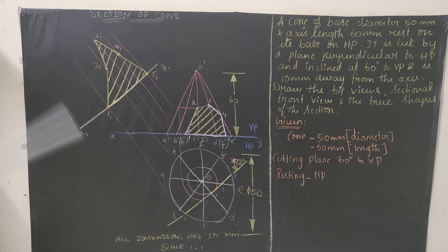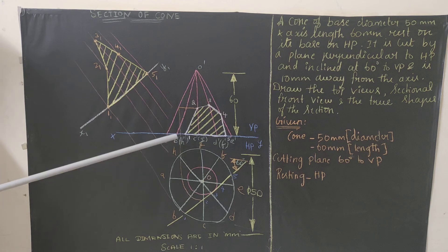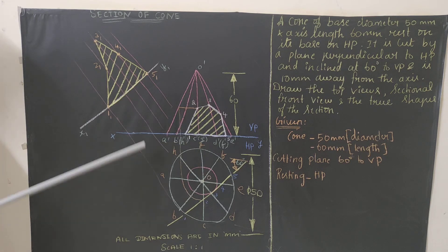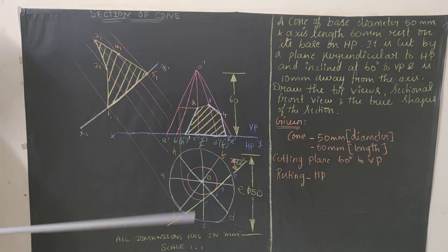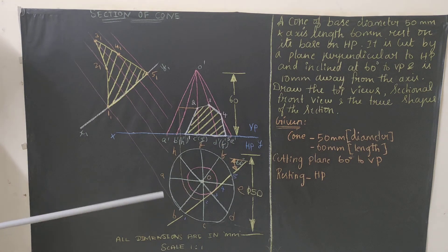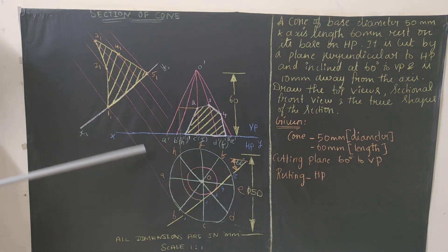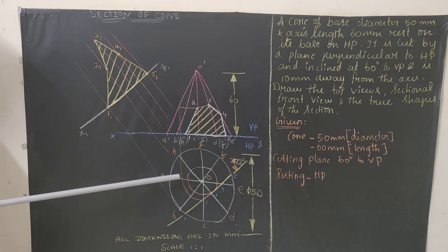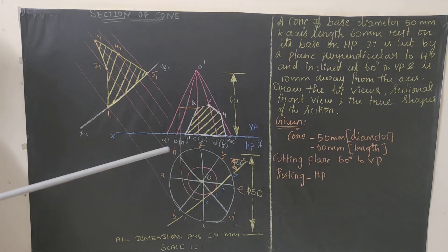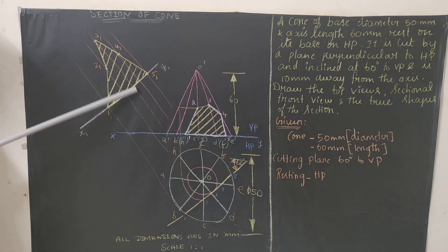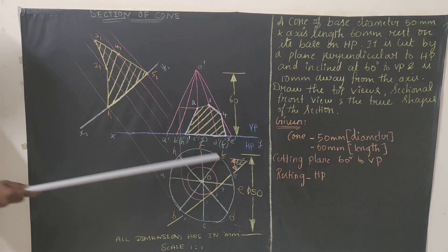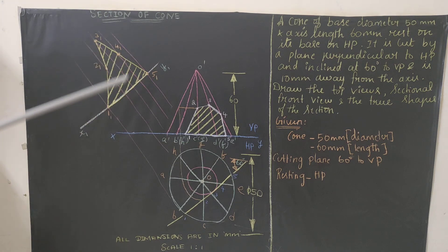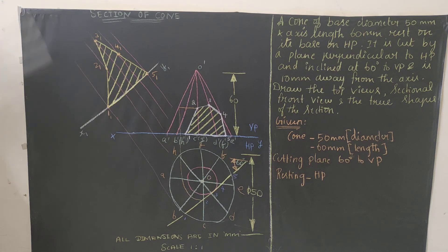From each of the five cutting points on the sectional front view, draw perpendicular lines to the new reference line X1Y1. These lines must be drawn away from the top view so the diagram looks clean — use an edge-shaped scale to extend them away. Draw perpendiculars from points 1, 2, 3, 4, and 5.